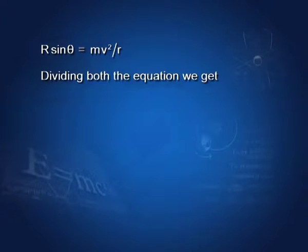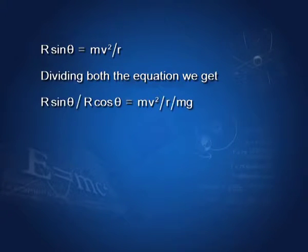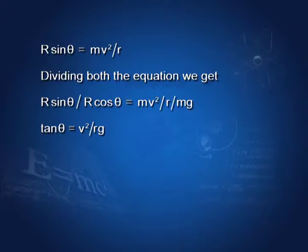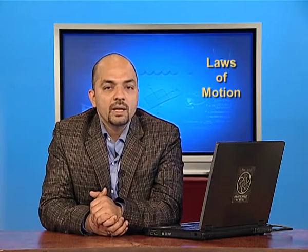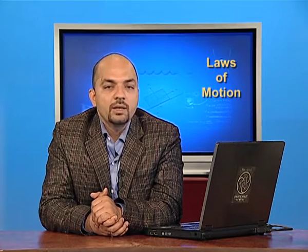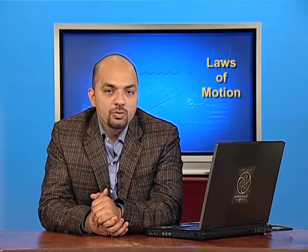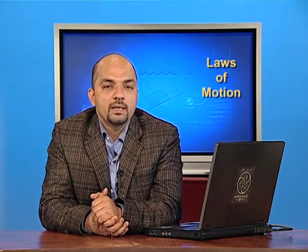Dividing both equations, we get R sin theta upon R cos theta equals Mv² upon R divided by Mg. Cancelling R from the left-hand side and M from the right-hand side, we get tan theta equals v² upon Rg. Using this relation, we can calculate the angle theta at which a cyclist has to bend his body while taking a turn.